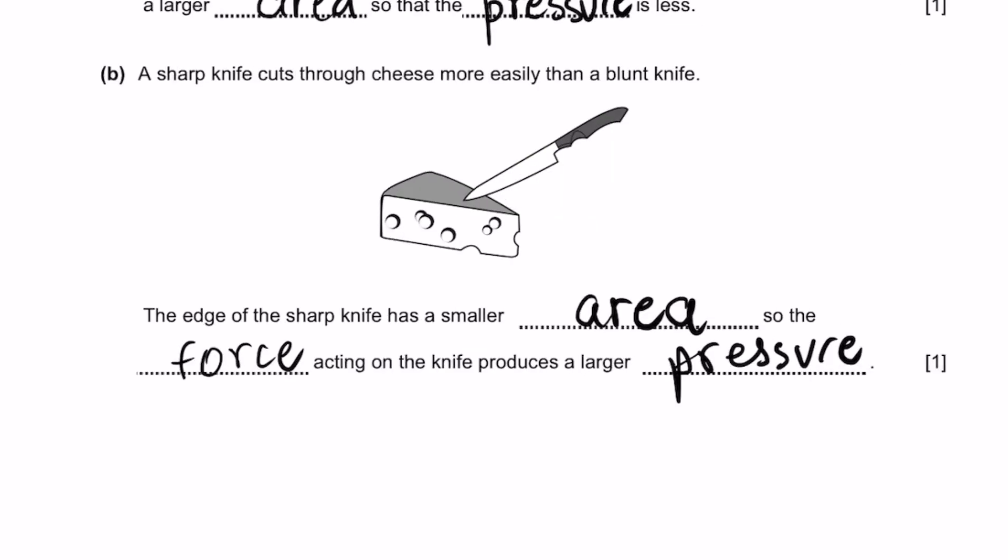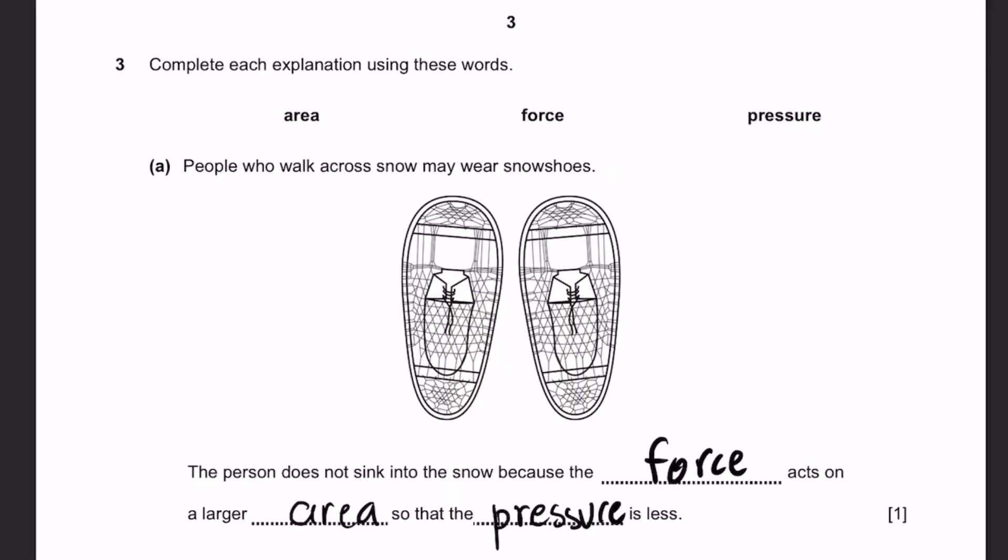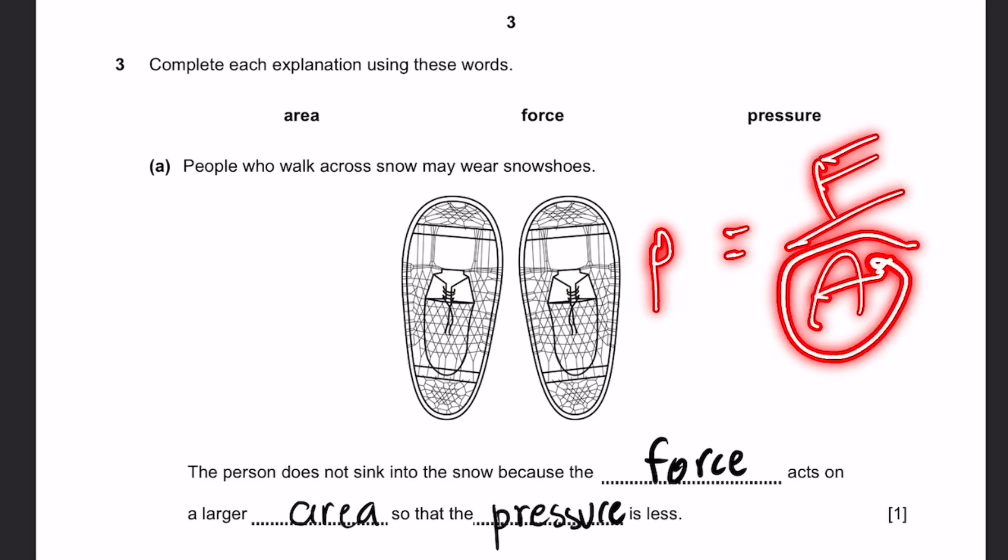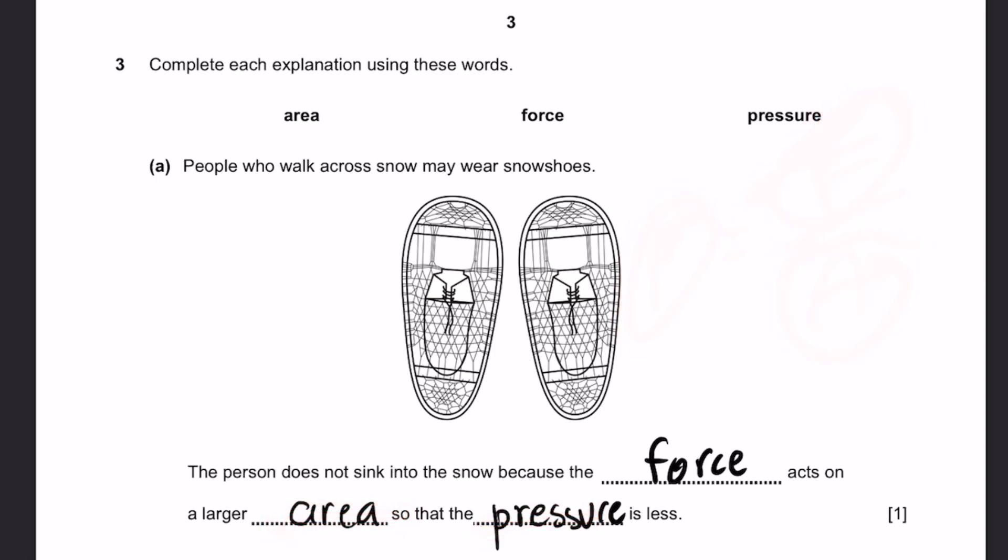Question 3. Complete each explanation using these words. Part A. People who walk across snow may wear snowshoes. The person does not sink into the snow because the force acts on a larger area, so the pressure is less. This is because pressure equals force by area.